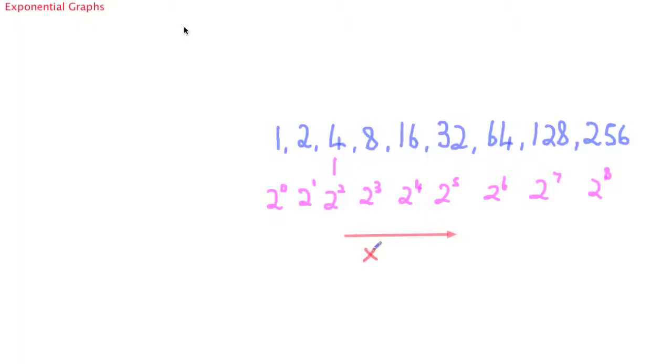Now what's basically going on here is as we're going to the right we are multiplying everything by 2. Or as we're going to the left we can think of that in the reverse way that we're dividing the previous term by 2.